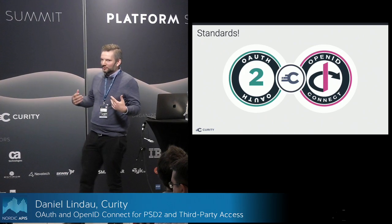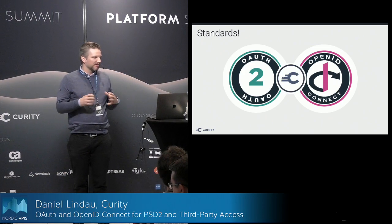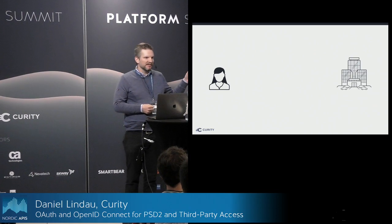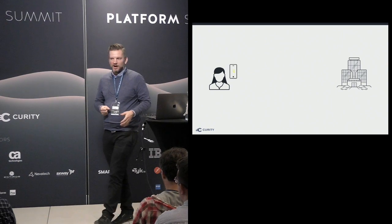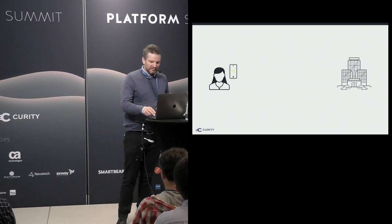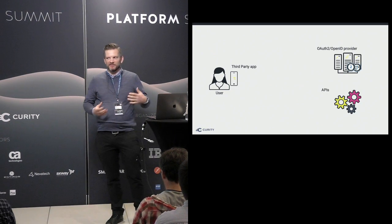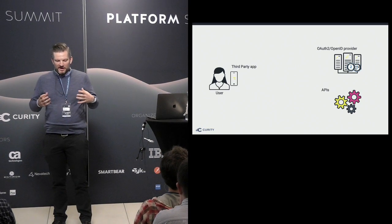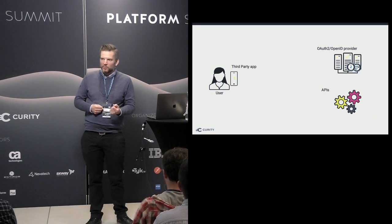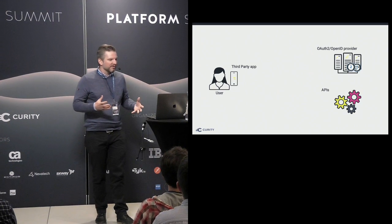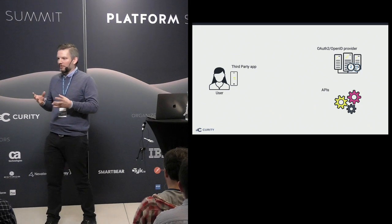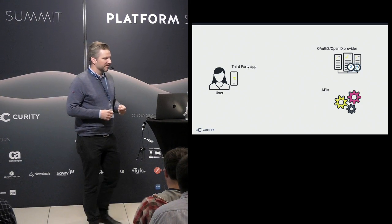We like standards, so we're going to try to solve this architecture by using standards. For the use case: we have a user who is a customer at a bank, and we want to bring in a third-party app that wants to track your payment history or something like that. In OAuth terms, we divide this into roles: the user is the resource owner, the third-party app is the client, the API or microservices is the resource server, and the bank needs an OAuth or OpenID Connect authorization server.